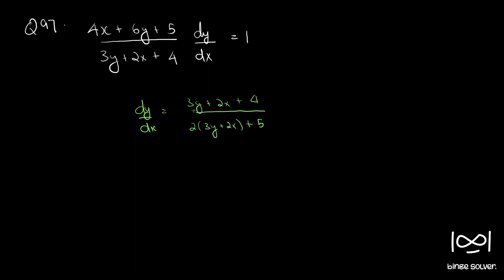So dy/dx is in the form of a function f of (3y plus 2x). We will do a substitution: let 3y plus 2x equal u, so differentiating gives 3 dy/dx plus 2 equal to du/dx. This is equation 1.